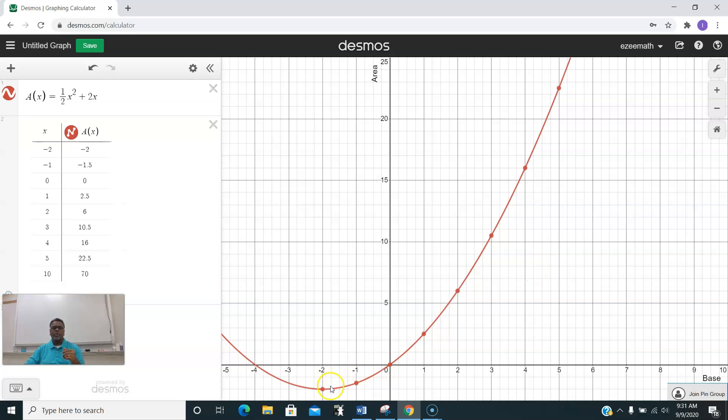If you want to know what is the vertex here, it's at negative two and negative two. If the base is negative two, the area is negative two, which is not possible because the measures cannot be negative. It has to be a positive value.